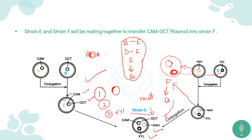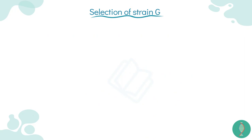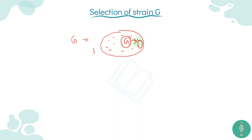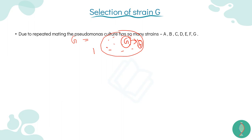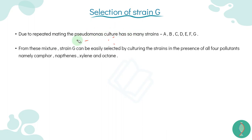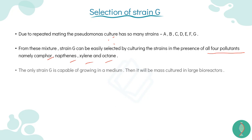Now, how will the selection work? For example, if strain G has all four pollutants present in one culture medium, we will see that strain G forms new colonies. The mixture of strains — through repeated conjugation steps A, B → E, C, D → F → G — means strain G can be easily selected by culturing the strains in the presence of all four pollutants. Only strain G, capable of growing in a medium containing all four, will survive and form colonies.